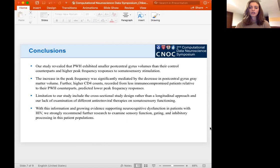So to conclude, our study revealed that persons with HIV exhibited smaller postcentral gyrus volumes relative to their control counterparts and higher peak frequency responses to somatosensory stimulation. This was explained by a full mediation model. Further, higher CD4 counts recorded from less immunocompromised persons with HIV predicted lower peak frequency responses.